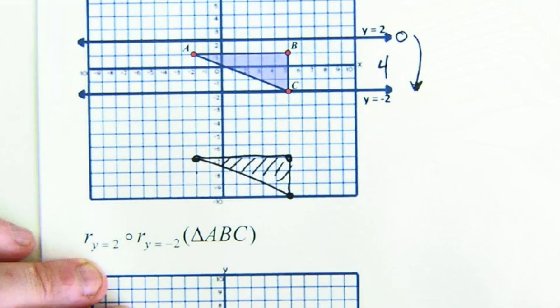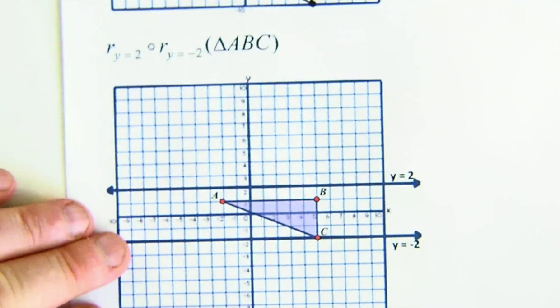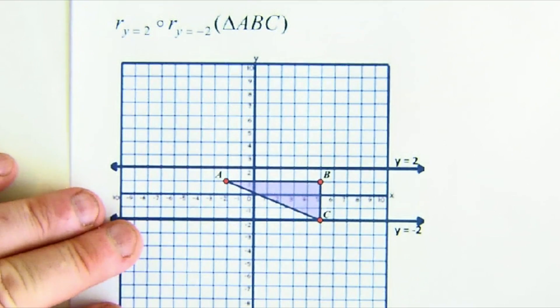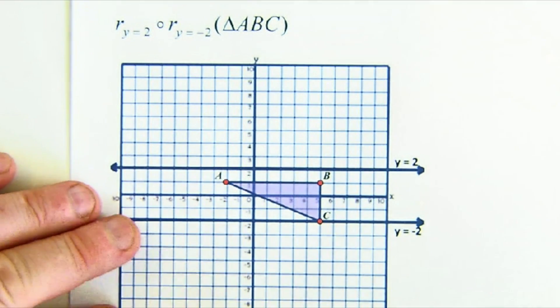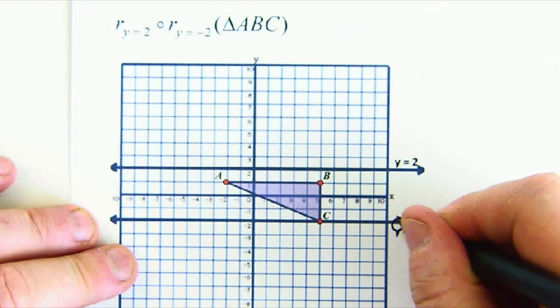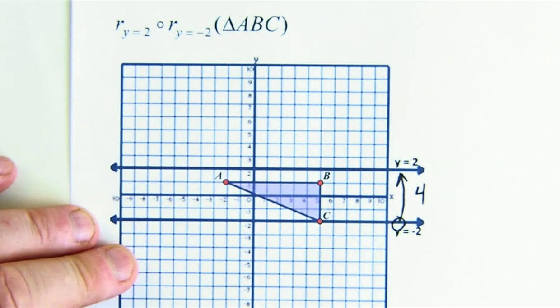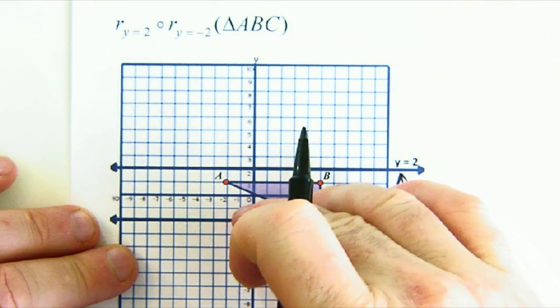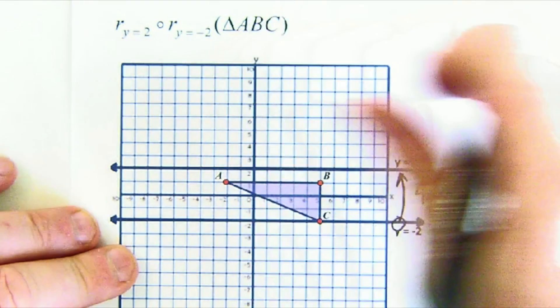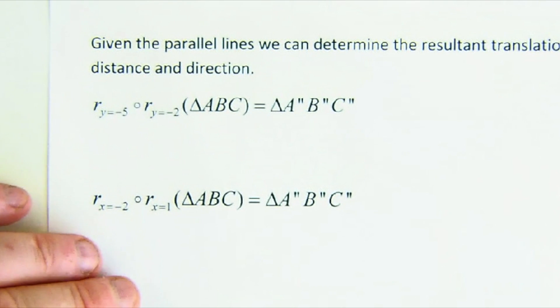Now I'm using my knowledge instead of physically working out each reflection. Let's do the same question but in reversed order: reflecting over y equals negative two first, then y equals two. We're going to go up eight, so the entire shape moves up eight — without any diagramming we can quickly cut to the chase.